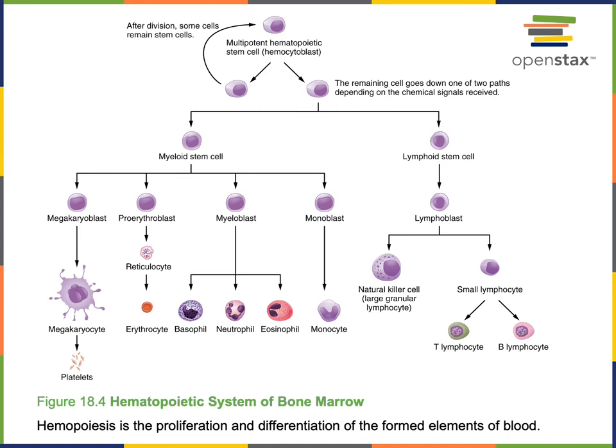The lymphoid stem cell differentiates into a lymphoblast, which is an immature lymphocyte. A lymphoblast can then differentiate to form natural killer cells, T lymphocytes, and B lymphocytes.